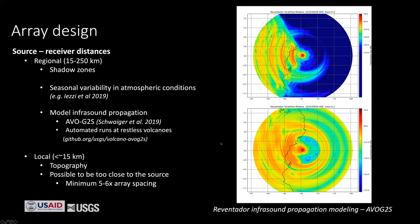Question from audience: what characteristics of the eruption would put it into a lower frequency category? Answer: it's mainly the size and energetics. Small strombolian eruptions are usually not producing 10-second energy, but a subplinian or plinian eruption would produce much lower frequency energy.